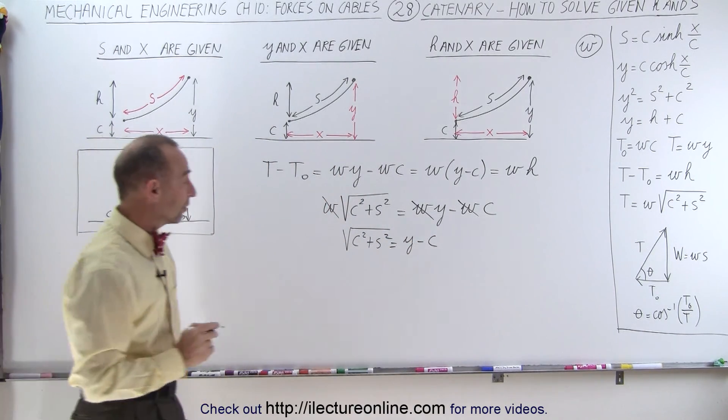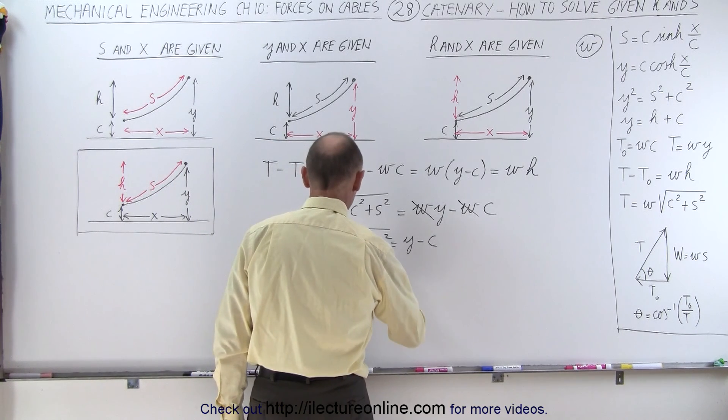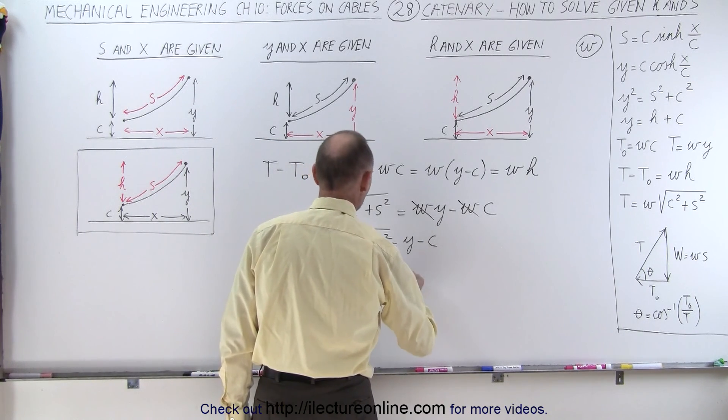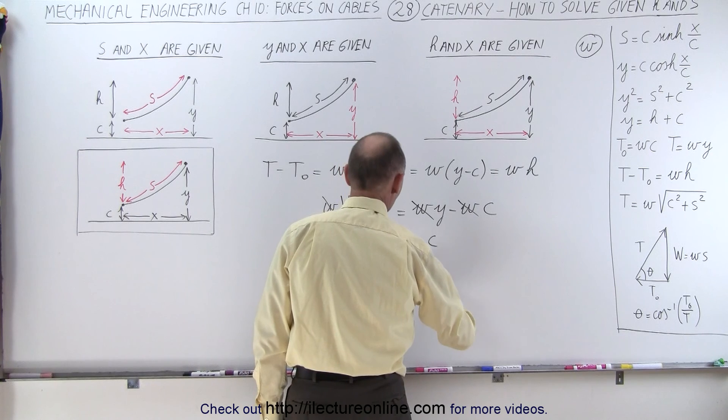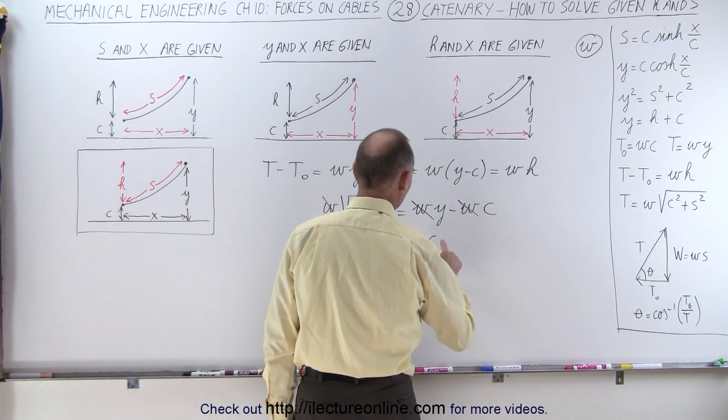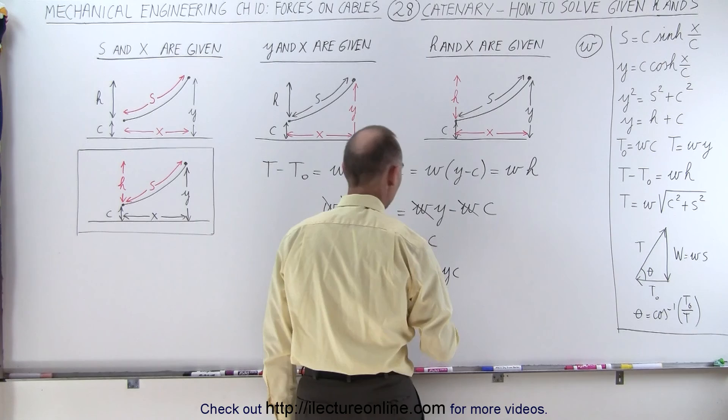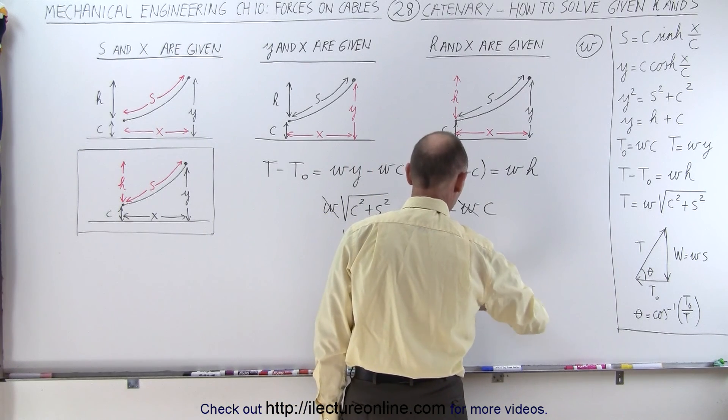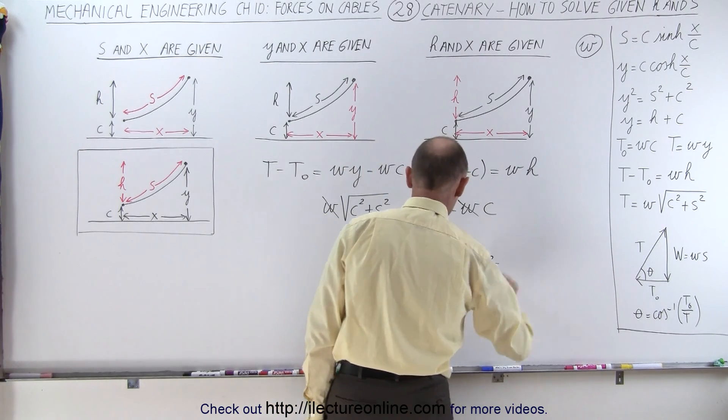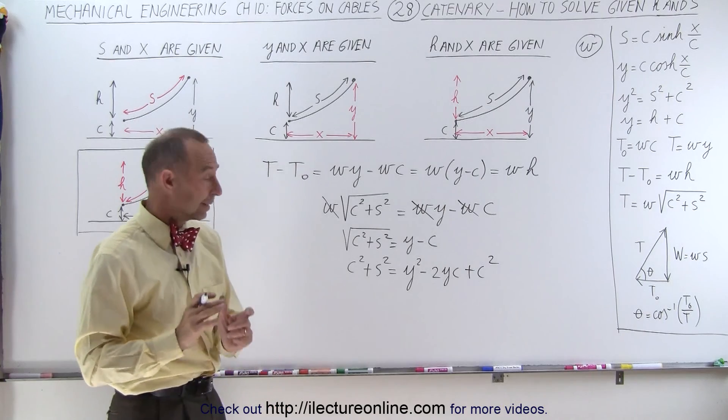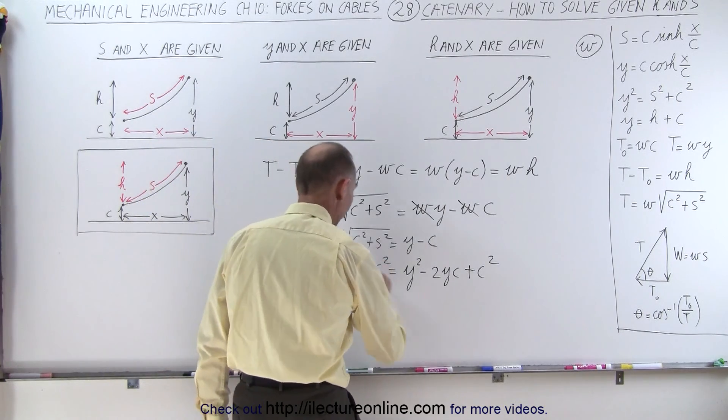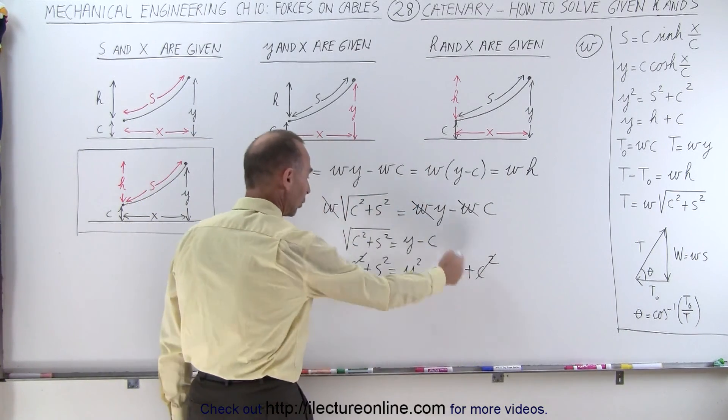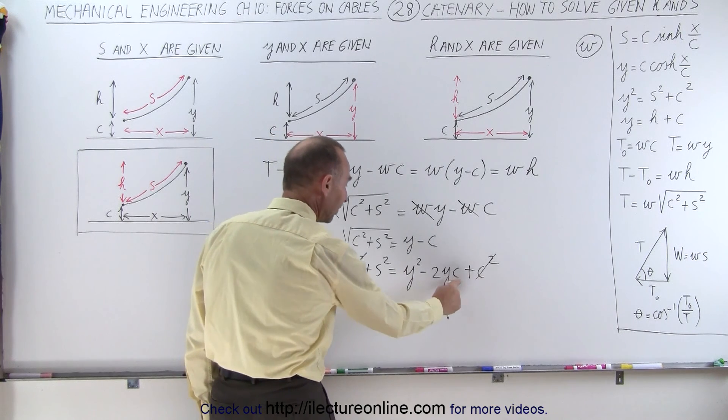I'm now going to square both sides of the equation. So I get C squared plus S squared is equal to Y squared minus twice the product of those two, which is Y times C plus C squared. And then notice that we can cancel out the C squared on both sides. And now we have an equation with only one C in there.